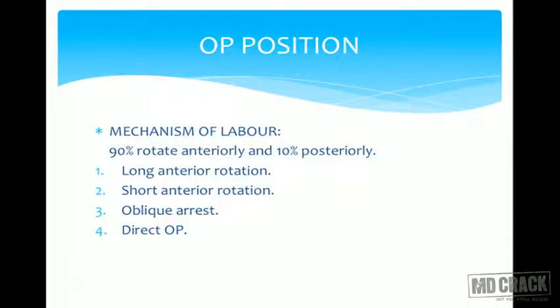What happens in labor? The most common occiput posterior position is right occiput posterior. Because engagement takes place in the oblique diameter, the right oblique is more accessible — the left oblique diameter is occupied by the sigmoid colon. So the baby chooses the right oblique, which favors right occiput posterior position. In favorable situations with good uterine contractions and an adequate pelvis — anthropoid or spacious gynecoid — 90% of the time there is long anterior rotation through three-eighths of the circle.